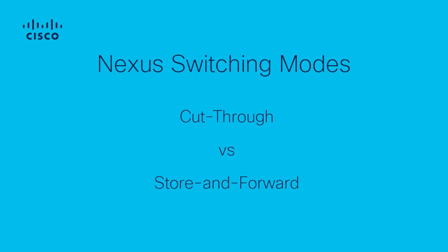Before jumping into our lab, let's have a brief refresher on how Cisco switches forward frames, and how this results in CRC frames propagating throughout the network. There are two potential switching modes that exist in Cisco Nexus switches.